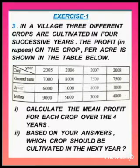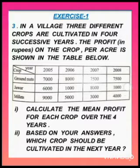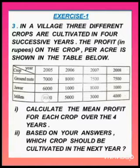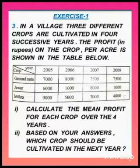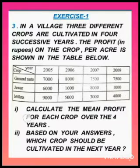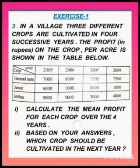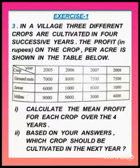Similarly, they have given Java as 6000, 10,000, 8000 and 1000. And last they have given millets which is 9000, 5000, 3000 and 4000. You have to calculate the mean profit for each crop over the four years — the mean profit of groundnut, mean profit of Java and mean profit of millets separately.